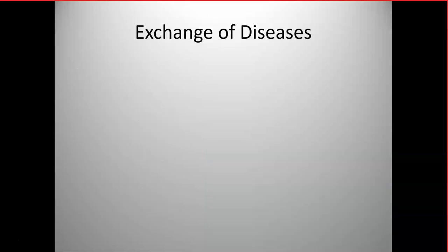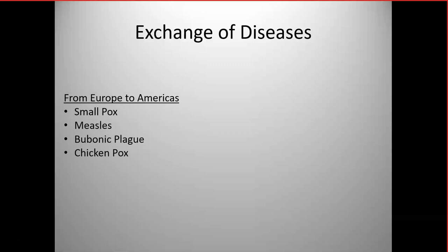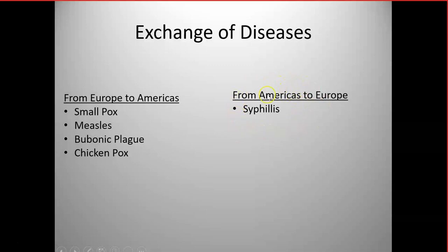Disease is one of the more profoundly significant areas of this process, because diseases from the old world to the Americas were particularly devastating. It's difficult for historians to know which diseases came from the Americas to Europe — some have surmised maybe syphilis — but we don't have a catalog of the diseases that existed in the Americas. Diseases that came from the old world to the Americas were diseases like smallpox, measles, bubonic plague, and chickenpox.